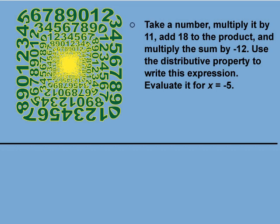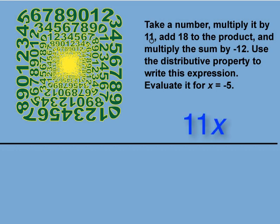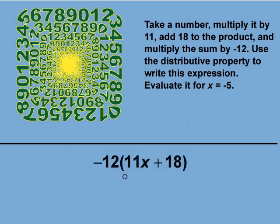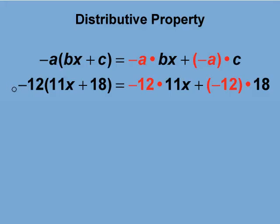Let's start with this part. Take a number and multiply it by 11. Since we don't know which number, we designate it as 11x. The number is increased by 18, so we write 11x plus 18. This sum, or the entire expression, is multiplied by negative 12. So we enclose the expression in parentheses and multiply the whole expression by negative 12, as shown here. This is the mathematical equivalent of this verbal expression. We now distribute the negative 12 to both terms, and we get negative 132x minus 216. Notice that the negative 12 changes the addition to subtraction here.